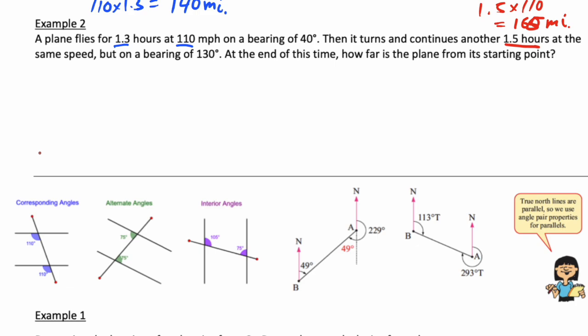A bearing of 40 - we'll draw the diagram in a second, but let's work out this one. It's 1.5 hours times 110, that gives 165 miles. Now let's draw the picture. 40 degrees from north - we draw a little north arrow usually in these diagrams. 40 degrees from north is like this way.